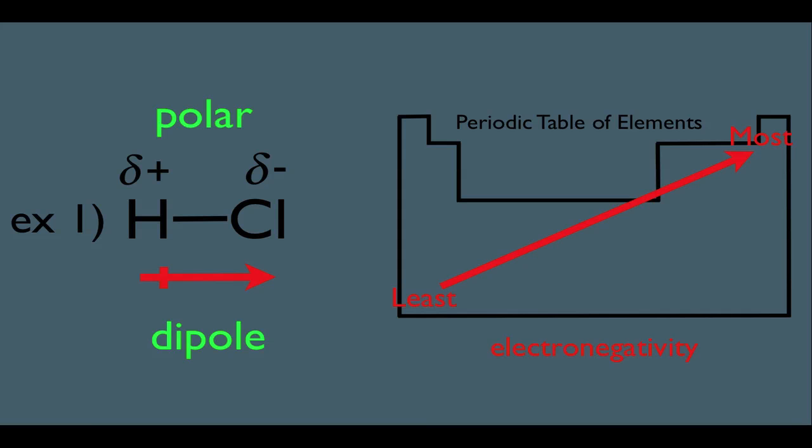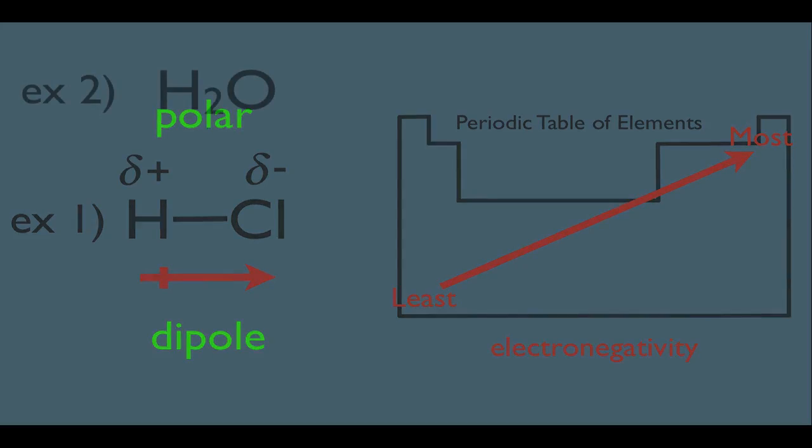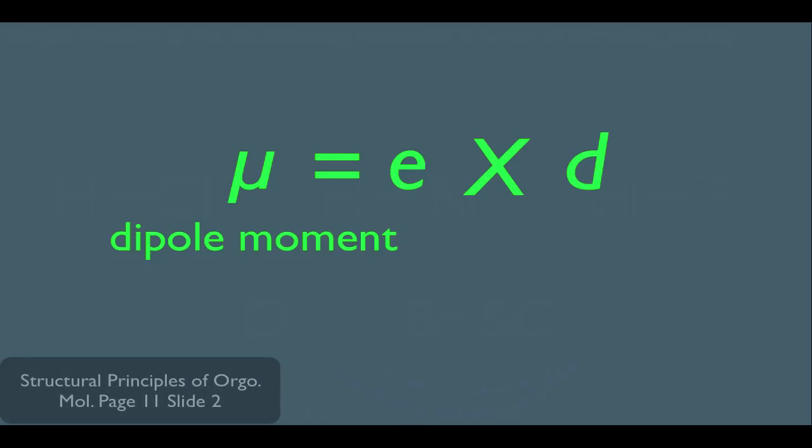To master organic chemistry, we have to be able to do this type of analysis on many molecules we encounter. This helps us determine how a molecule might behave in a reaction. There's one more thing I want to talk about here, is that you can actually quantify a dipole moment, which means you could put a number on it.